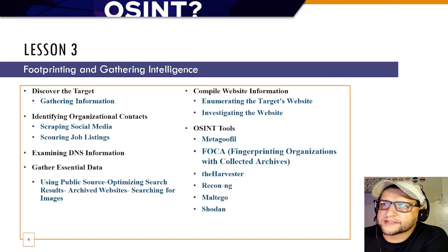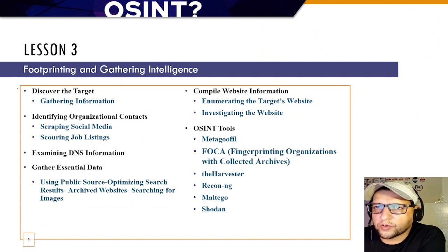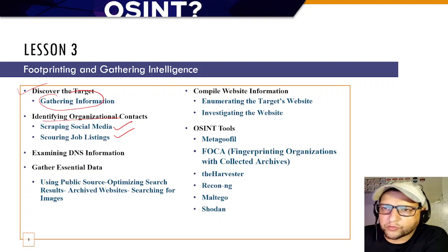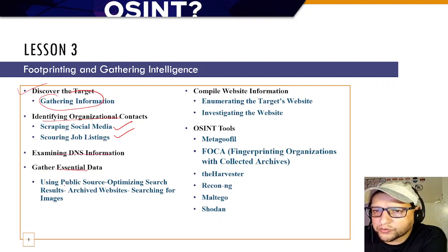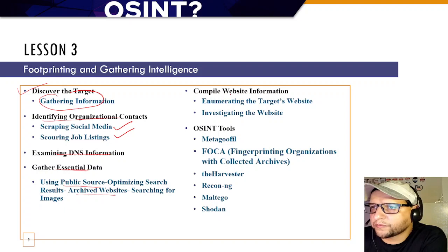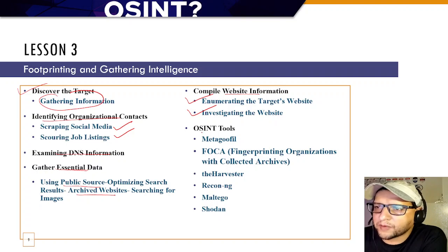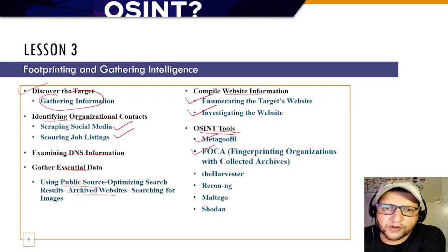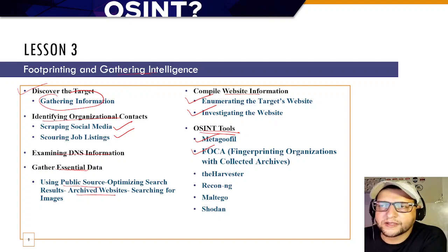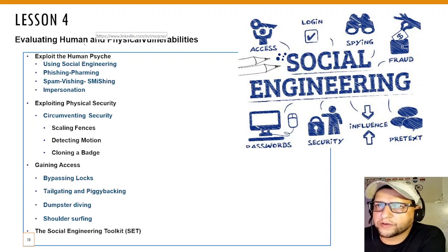Lesson 3 covers footprinting and gathering intelligence. You'll learn how to discover a target, gather information, identify organizational contacts through scraping social media and job listings, examine DNS information, use public sources, optimize search results, search archive websites and images, enumerate target websites, and investigate websites. Tools covered include Maltego, FOCA, theHarvester, Recon-ng, Maltego, and Shodan.